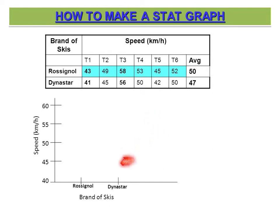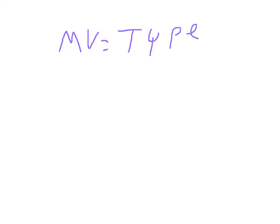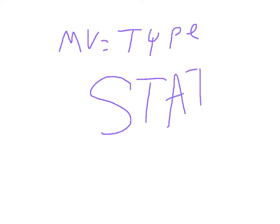Go ahead and peruse through this video, pause it as you need to, rewind it as you need to. One way to know which graph to make is simply by looking at your manipulated variable. If your manipulated variable is a type of something, you're always going to make a stat graph or statistical analysis graph. If it's a scale of numbers, that would be a line graph. If it's a type of something, a stat graph.